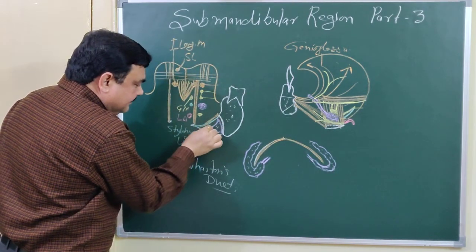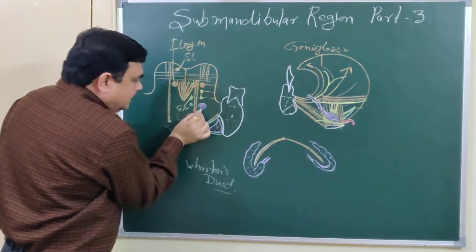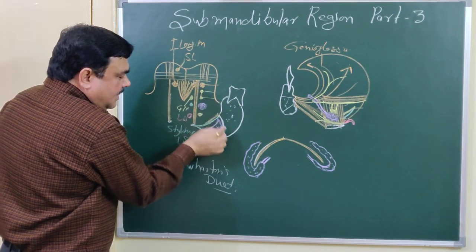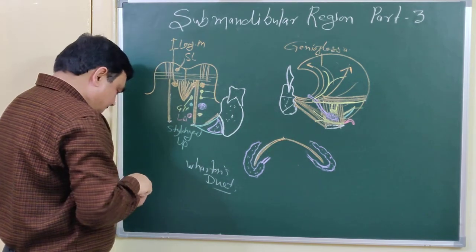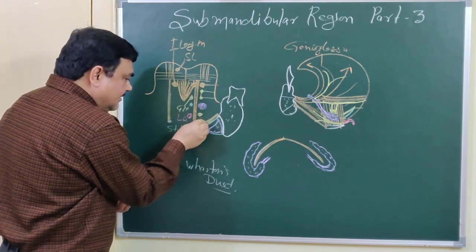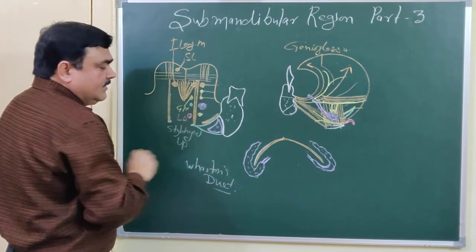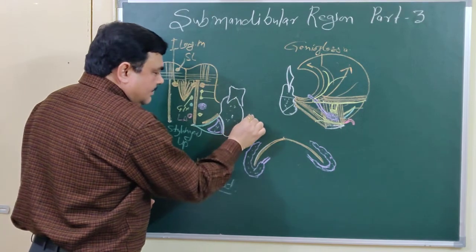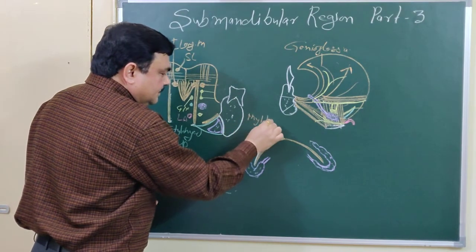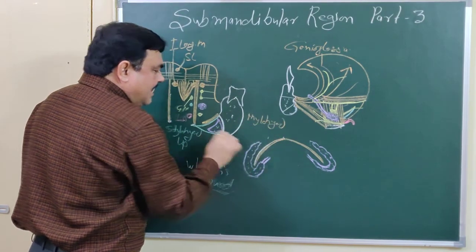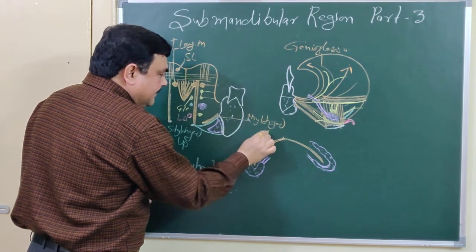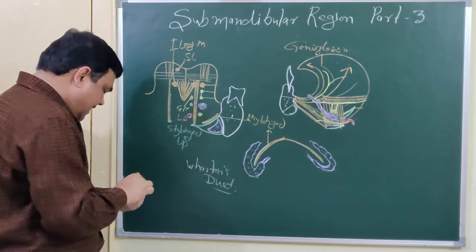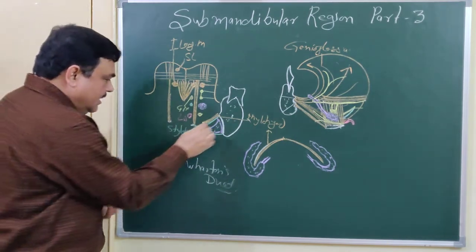Looking at this section, here is the superficial part and here is the deep part of the gland. In between these two parts there is a muscle — this is the mylohyoid muscle. This is the proximal part.